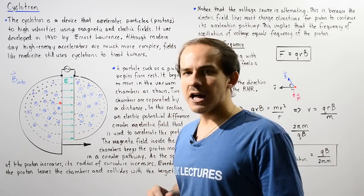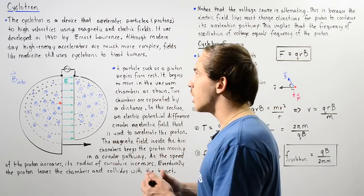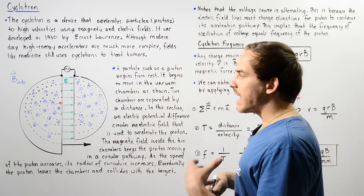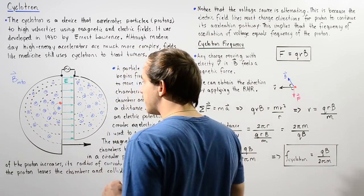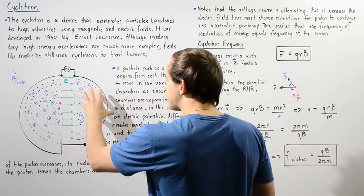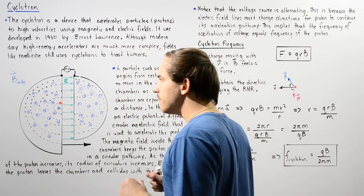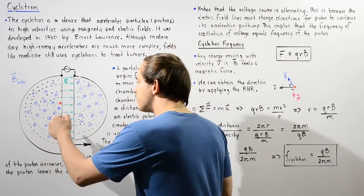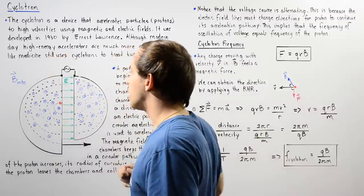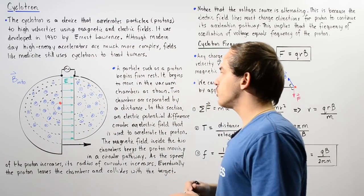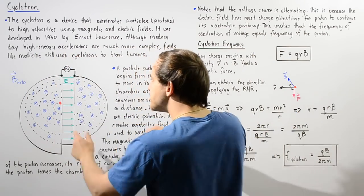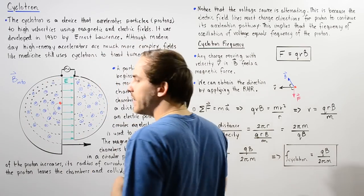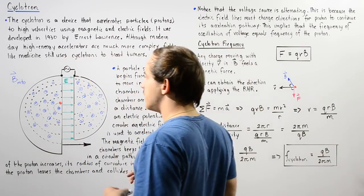Let's take a look at a diagram that describes the structure of the cyclotron and how it works. We have two semi-circular vacuum chambers — vacuum chamber one and vacuum chamber two. Within these vacuum chambers, we have a magnetic field that points into the board, shown by the blue axes with circles around them. Between the two semi-circular vacuum chambers, we have a space where we create an electric potential difference, which creates an electric field shown by the green arrows.